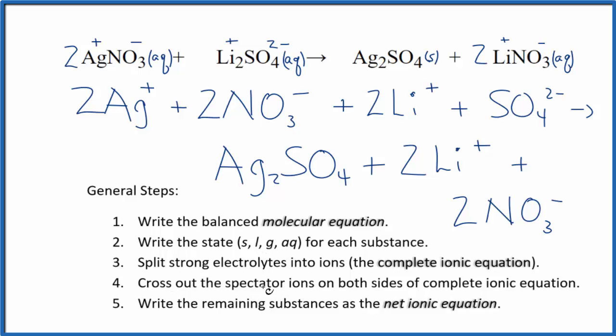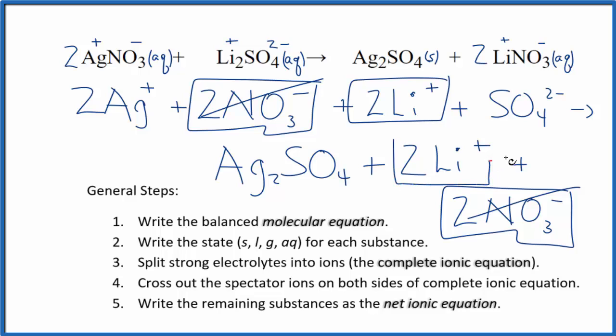Now, to get the net ionic equation, we're going to cross out spectator ions. They're on both sides of the complete ionic equation. They haven't changed, so we're not interested in them. In the reactants, here are those two nitrate ions. And here in the products, we have two nitrate ions. These are spectator ions, and we're going to cross those out. In the reactants, we have two lithium ions, and in the products, two lithium ions. Spectator ions. Cross them out.